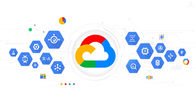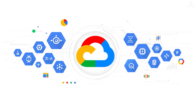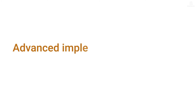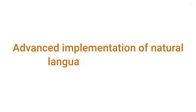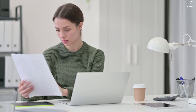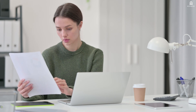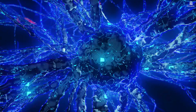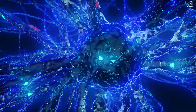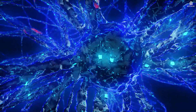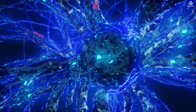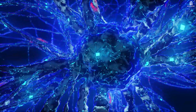Have a look at the Google Cloud Translation API. It offers an advanced implementation of natural language processing. It acts by examining source text to identify what language it's written in, then uses neural machine translation to translate it into other desired languages dynamically.